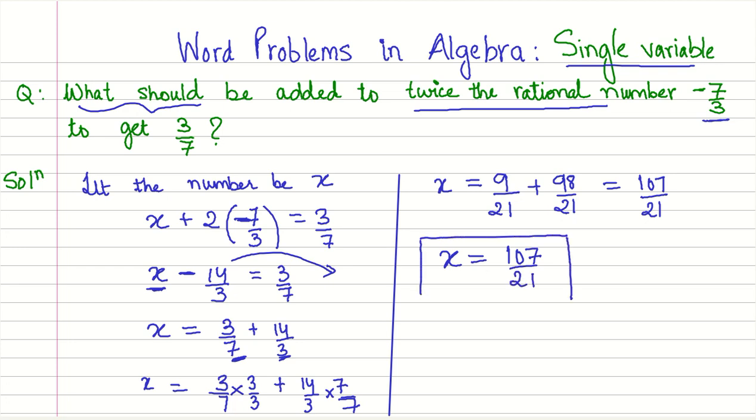So we should add 107 by 21 to twice of minus 7 by 3 to get 3 by 7. And if you like to check, you can just substitute x equals 107 by 21 in this. And when you substitute in this equation,